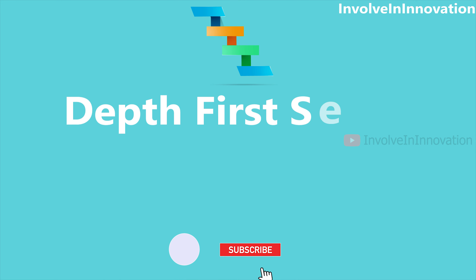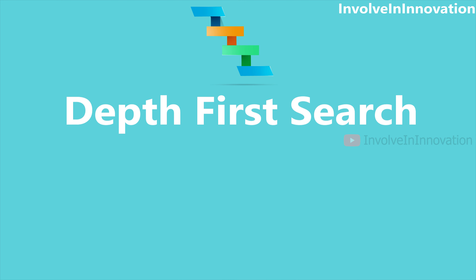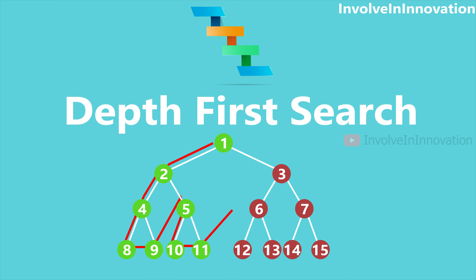In this video we will see about one of the tree traversal algorithms which is depth first search. To perform depth first search, go downward towards the depth of the tree. If you reach a dead end, move back and choose another path. This is the base of depth first search.